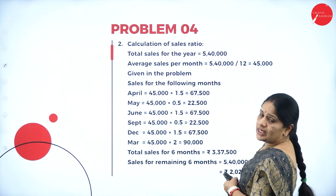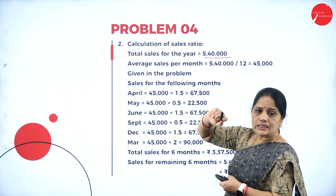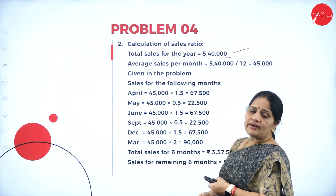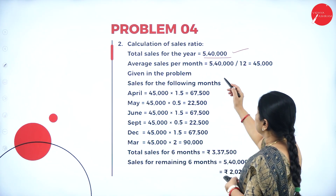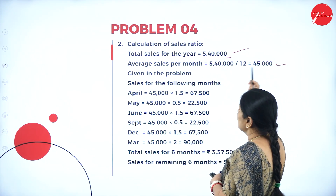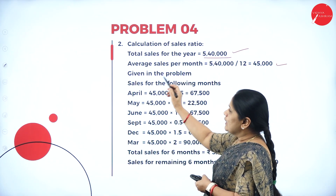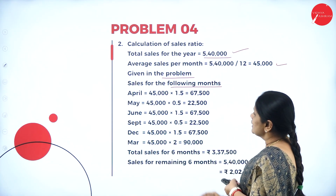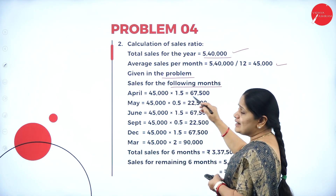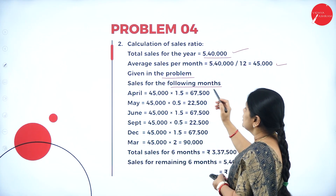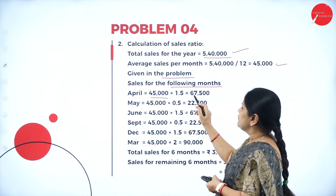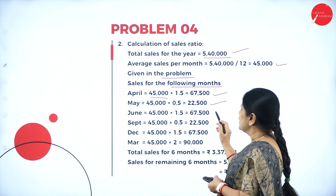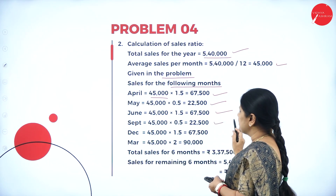Now for the calculation of sales ratio: total sales for the whole year is 5,40,000. Dividing by 12 gives an average monthly sales of 45,000. For April, it is 1.5 times the average, so 45,000 into 1.5 gives 67,500. For May it is half, June is 1.5 times, September is half, and December and March also have variations.